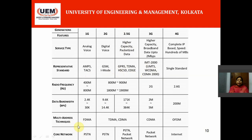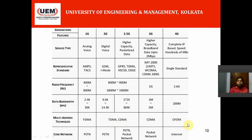Multiple access techniques were used across generations. For first generation, only FDMA was used. For second generation, TDMA and CDMA in combination. For third generation, a higher version of CDMA only. And for fourth generation, OFDMA — Orthogonal Frequency Division Multiplexing — is used. This is a brief overview of the different generations of mobile technology.